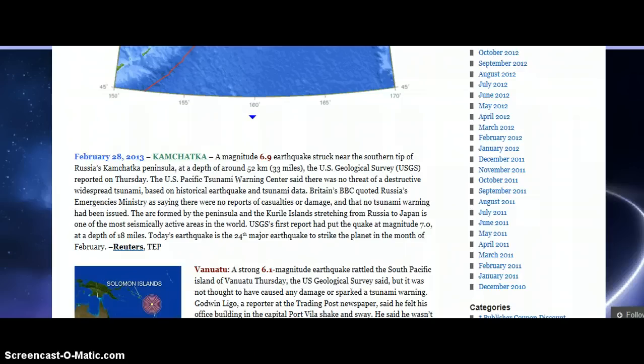A magnitude 6.9 earthquake struck near the southern tip of Russia's Kamchatka Peninsula at a depth of around 52 kilometers, 33 miles. The U.S. Geological Survey reported on Thursday.